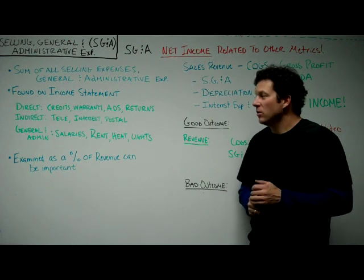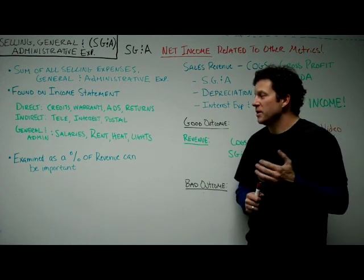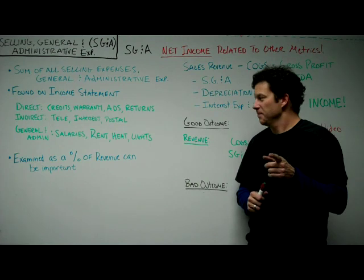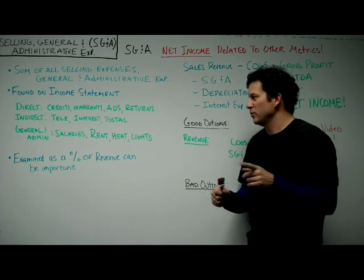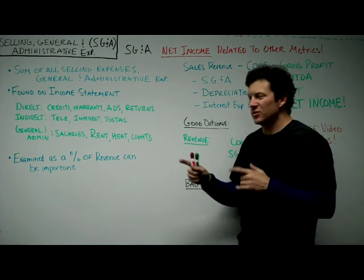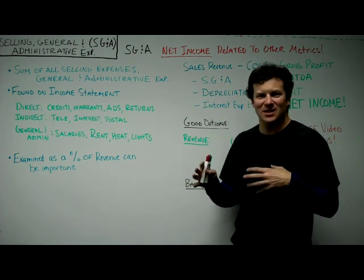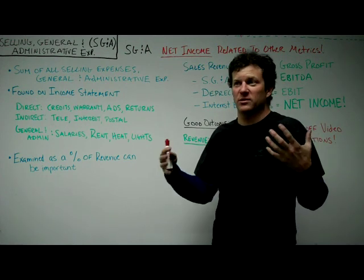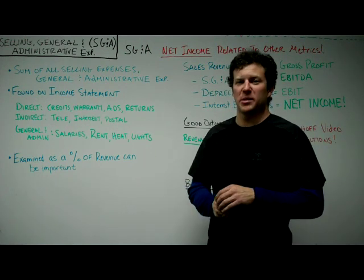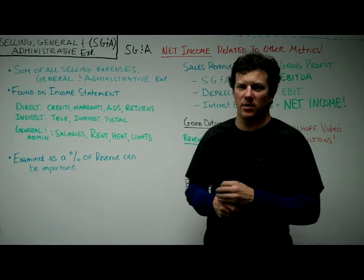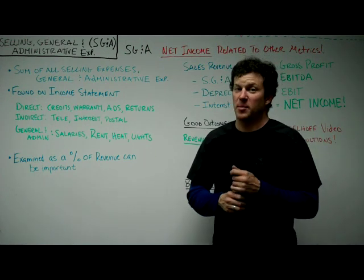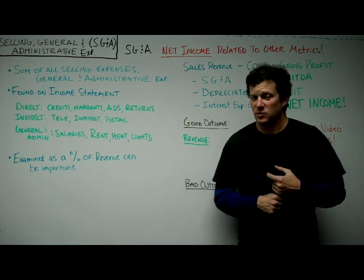General and administrative expenses refer to things like salaries, rent, heat, and light — just the general stuff of running a business. A lot of times that's also referred to as operating expenses.